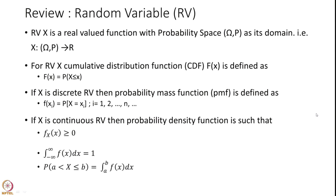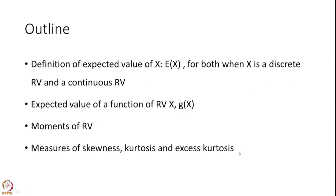We gave some examples in the previous session and now we move on with further properties of the random variable. In this session we plan to give a definition of the expected value of X, written as E of X, for both discrete and continuous random variables. We will also define the expected value of a function of a random variable g(X), define the moments of a random variable, and give details on measures of skewness, kurtosis, and excess kurtosis.